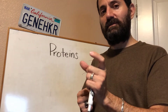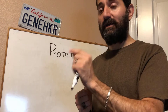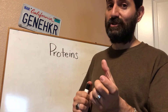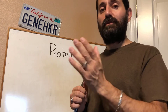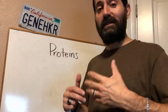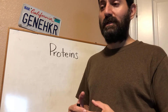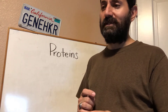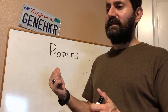A gene is the information for a protein — how to build a particular protein. For example, the insulin gene is just the information for how to put together the insulin protein, and then the insulin protein has a job: it goes on and regulates blood sugar. So proteins have all sorts of jobs in the cell.